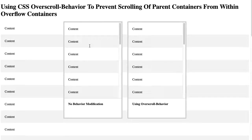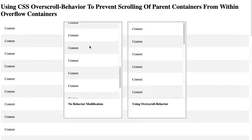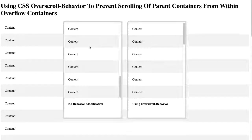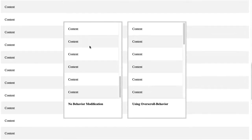One of the issues I often run into with an overflow container is that when the user reaches a local maxima of the content within that overflow container, subsequent scrolling of the mouse wheel gets applied to one of the ancestor elements, such as the body. As I scroll down to the bottom here, you can see that it's being applied to this overflow container, but then if I hit the bottom and I pause and then I scroll again, sometimes this gets applied to the body element.